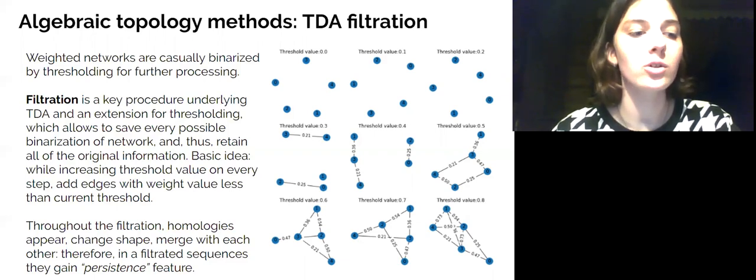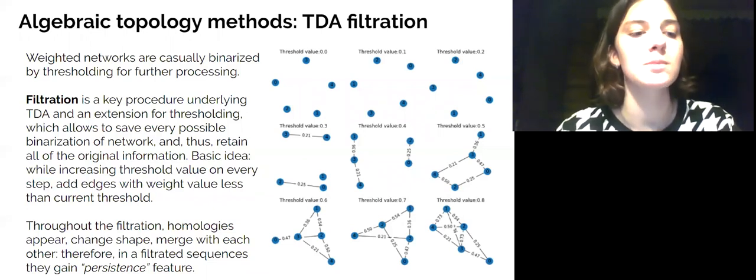To avoid that, TDA proposes a procedure called filtration, which records every possible binarization of the original network while increasing the threshold value, and thus forms a sequence of simplicial complexes built on every step.